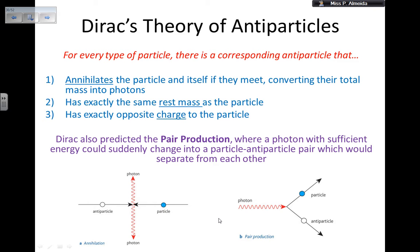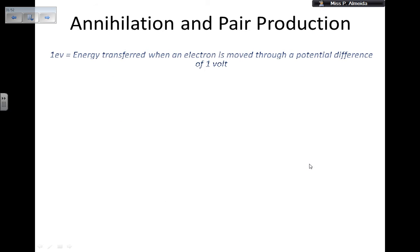In pair production, a photon with enough energy produces both a particle and its antiparticle, which then go in separate directions. So how do I find the formulas — what energy do I get from annihilation, or what energy must the photon have to produce the particles and antiparticles?